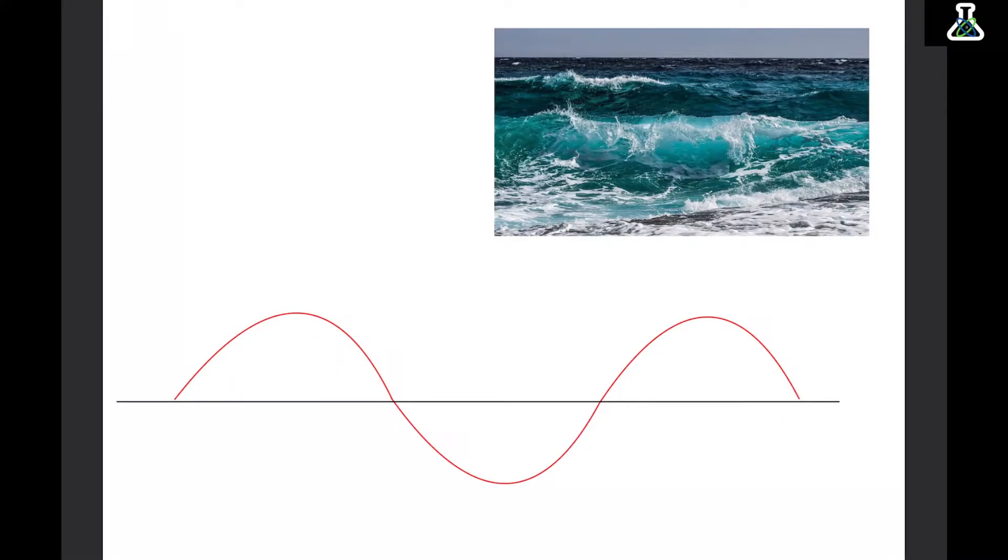The first thing we need to know about waves is that they transfer energy, and they do this without transferring matter, so the particles always stay in the same place. Imagine you are at the beach and you throw a ball into the sea. The waves constantly come towards you at the beach, but the ball doesn't - the ball just bobs up and down in the water. This is because the actual water molecules aren't moving with the waves, only the energy moves.